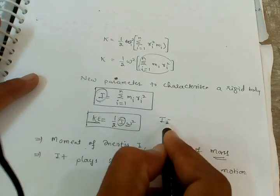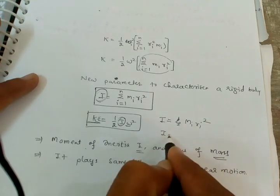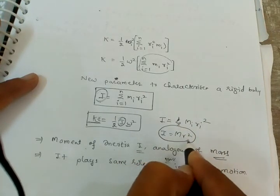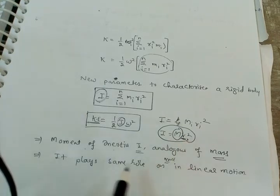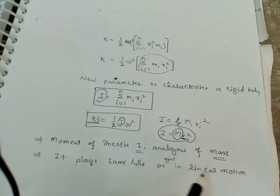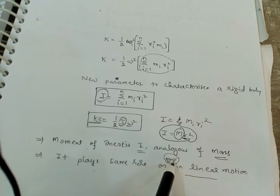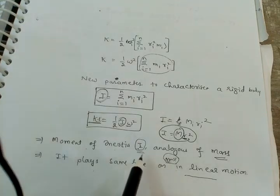So we got I equal to sum of m_i r_i squared, which is analogous to M r squared for a total body, where M is the total mass and r is the particle distance from the rotation axis. The moment of inertia I is analogous to mass — it plays the same role in rotational motion as mass plays in linear motion.